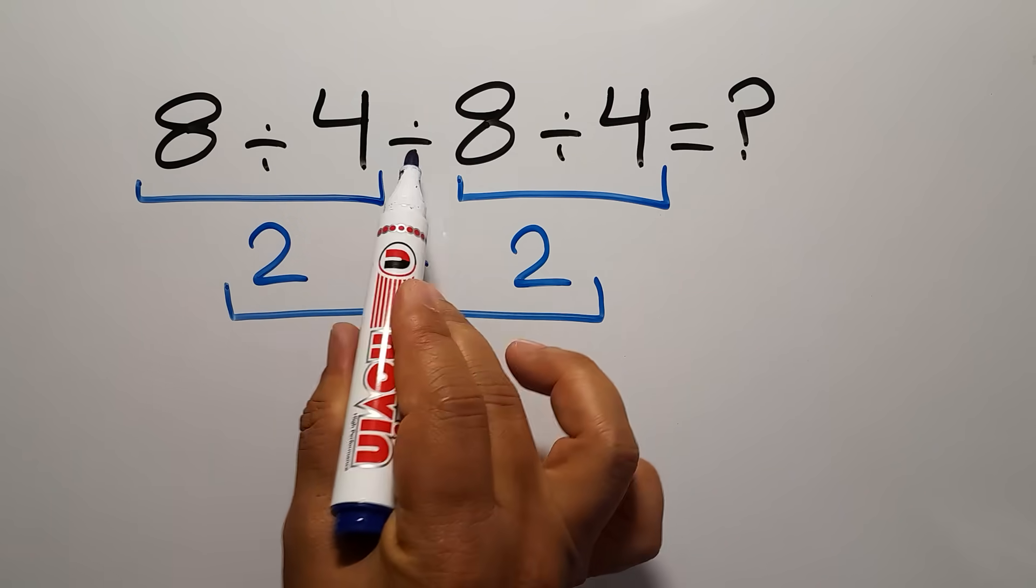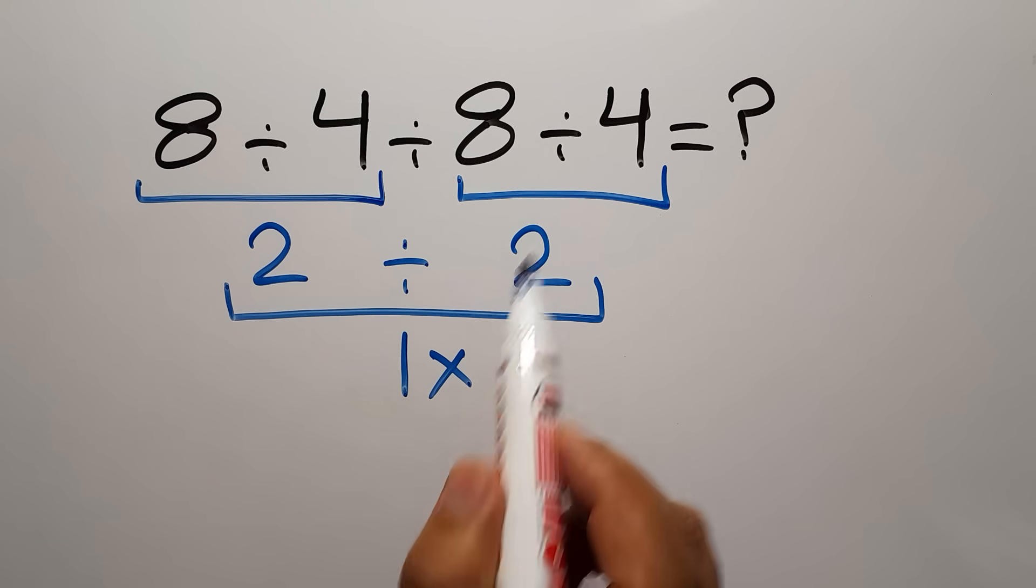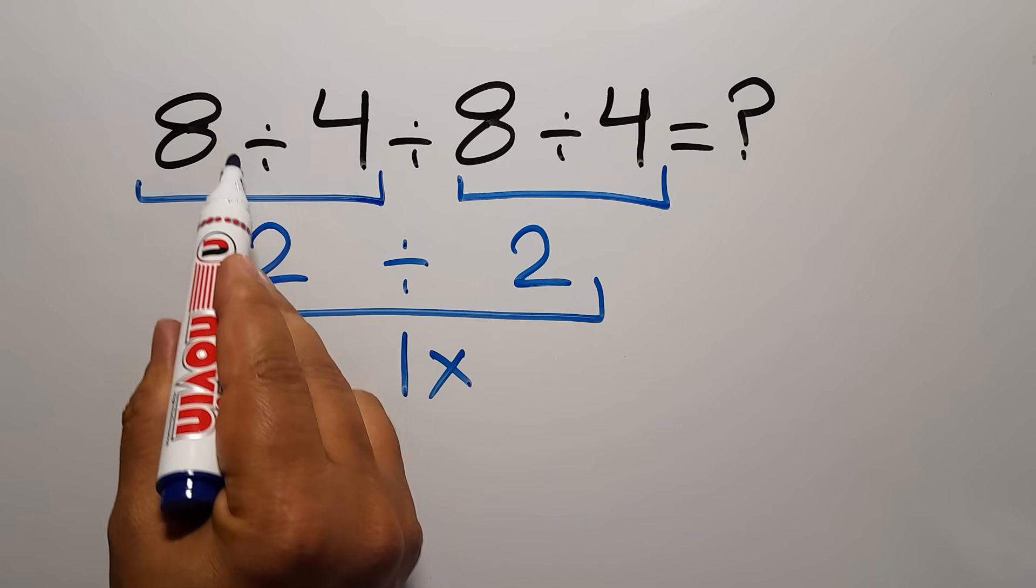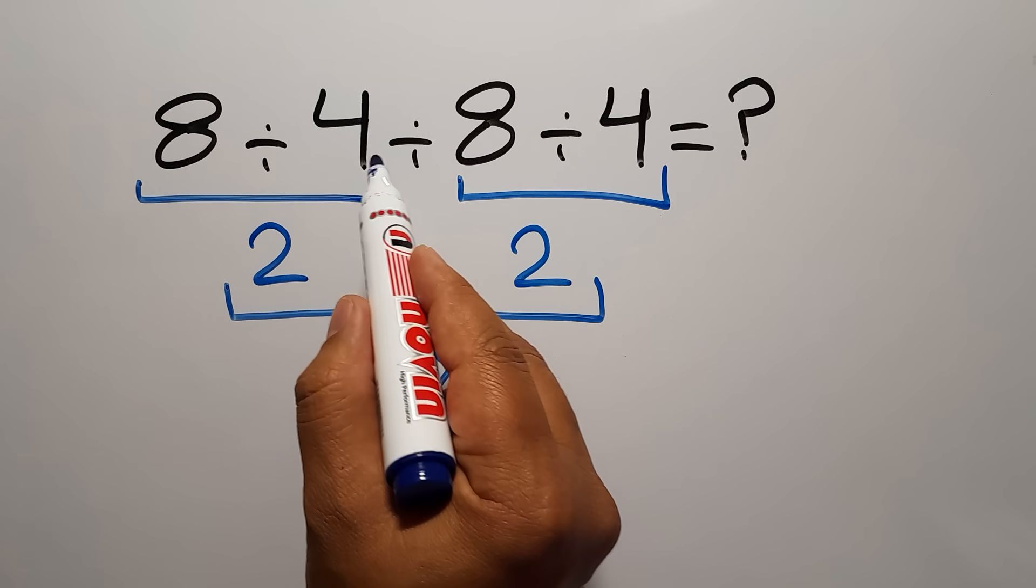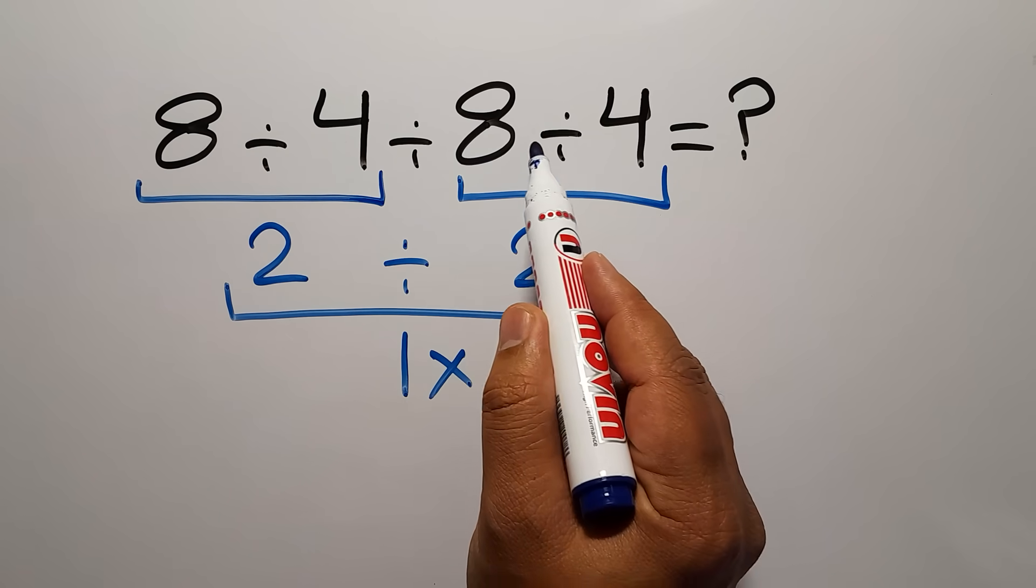When we have more than one division in one expression, we have to work from left to right. So first we have to do this division, then this division, and finally this division.